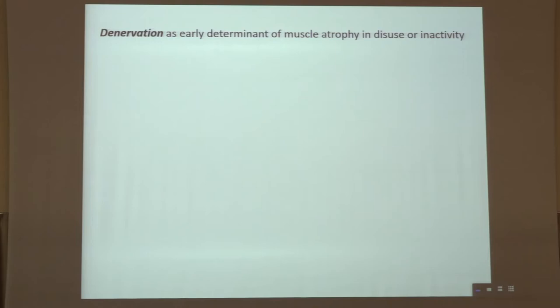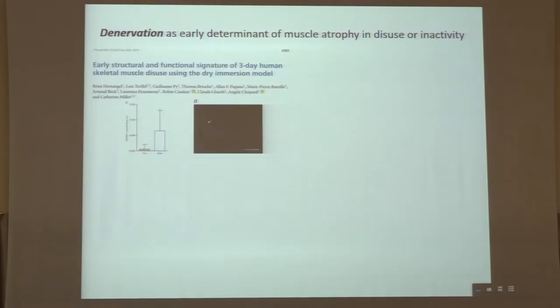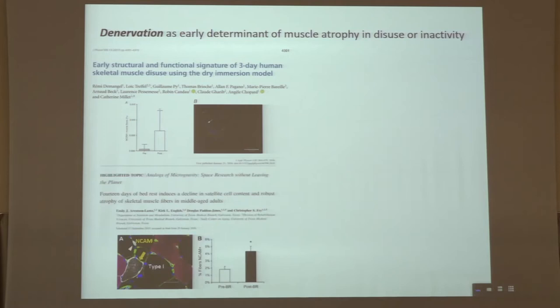But at the moment there are few data regarding denervation as early determinants of muscle atrophy in these conditions. In particular, in humans, there is a study published in 2017 using a dry immersion model of three days that demonstrated a significant increase of NCAM-positive myofibers as a sign of denervation.